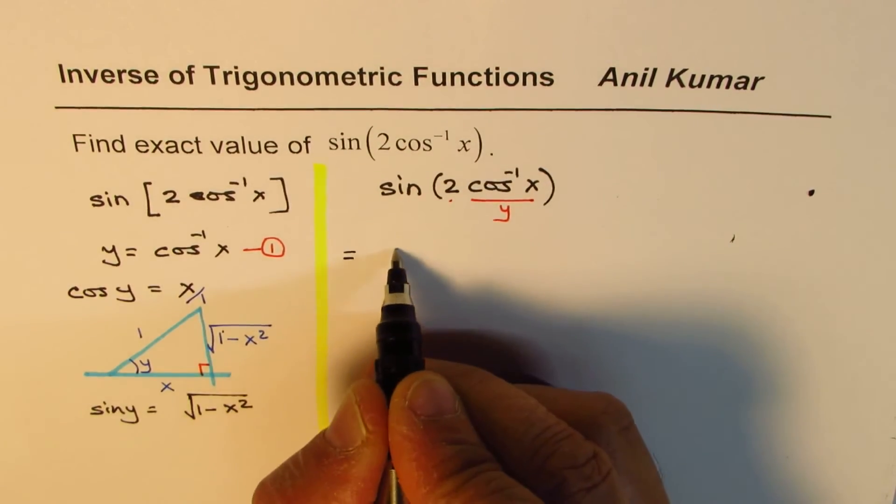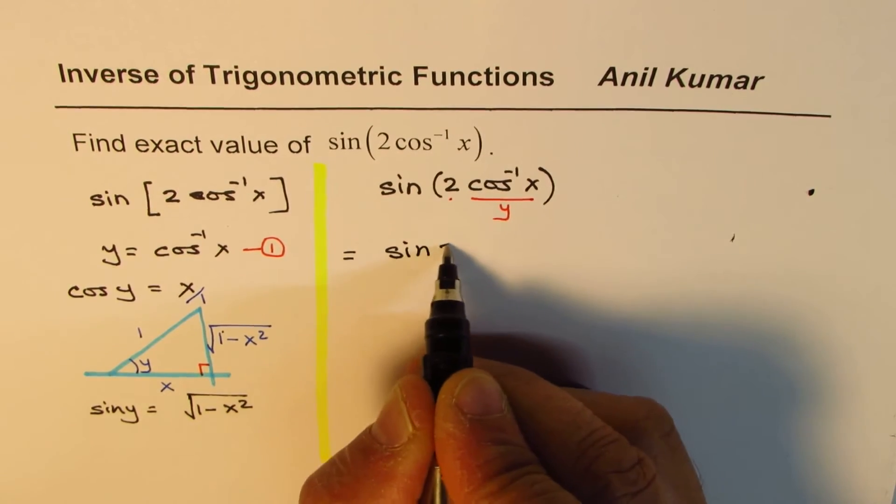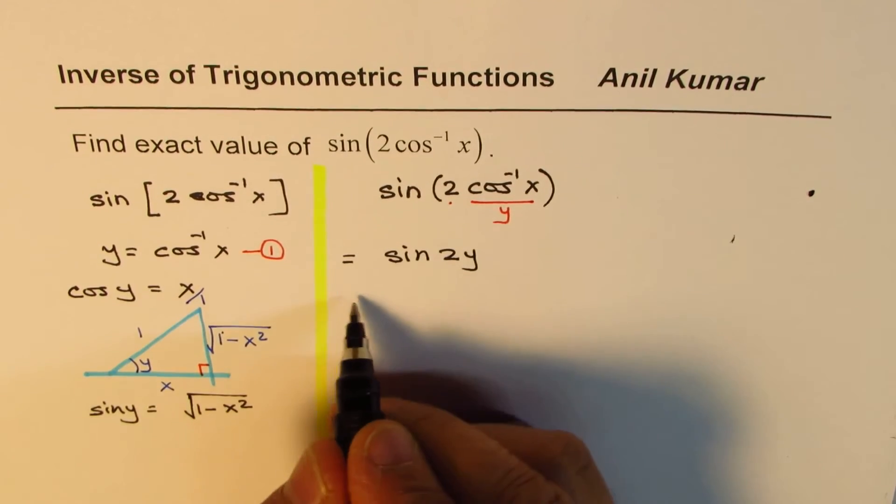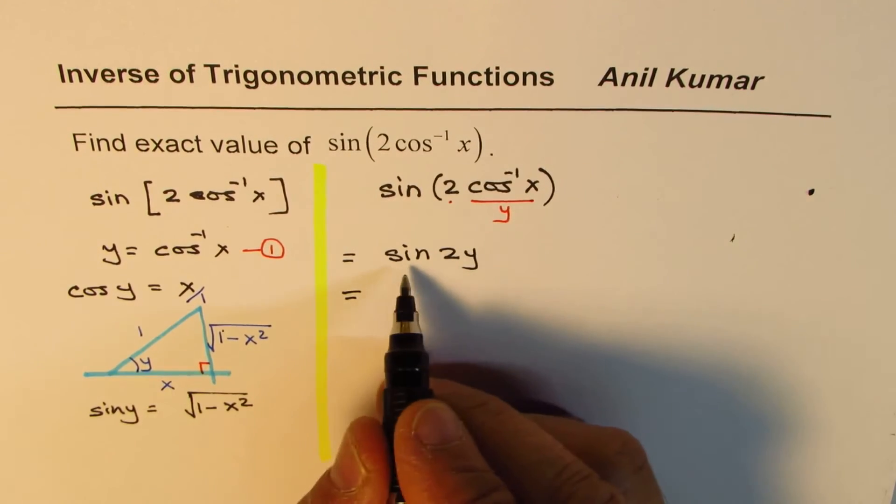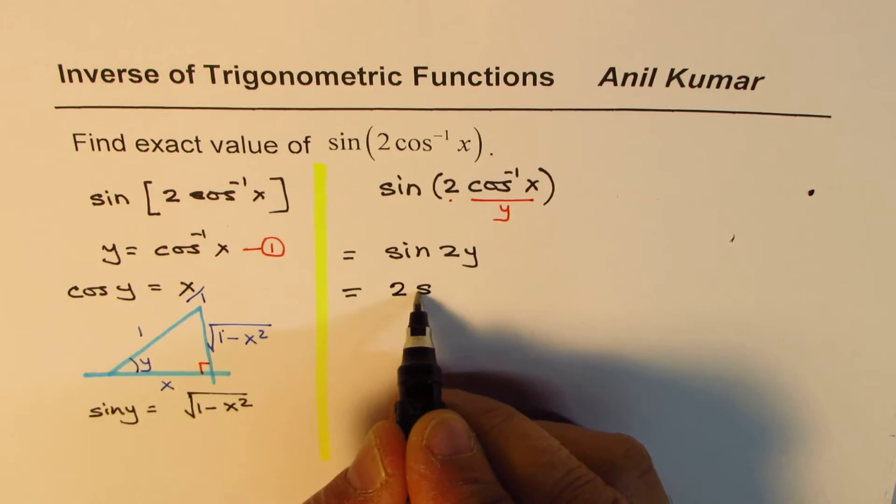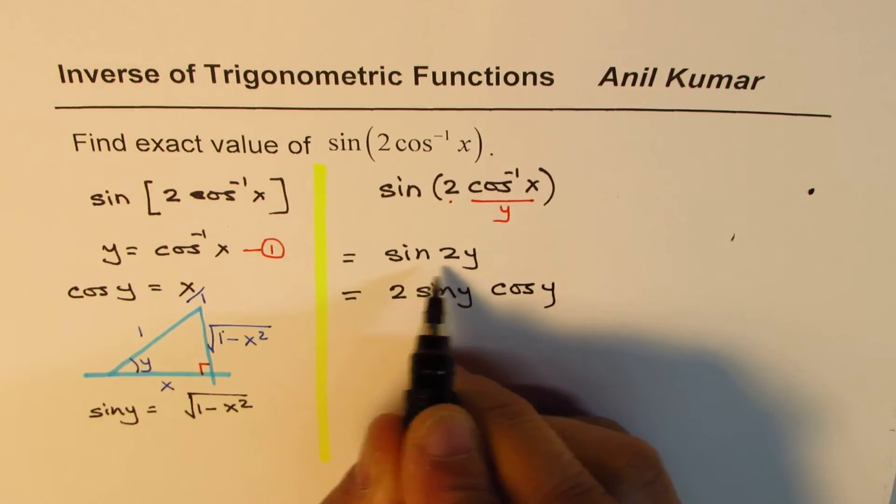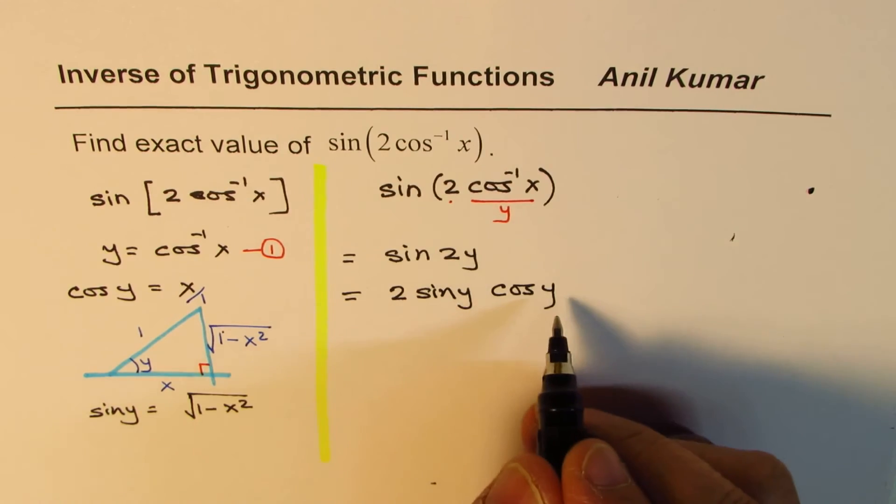We get this as sin 2y. Cos⁻¹x is y, so we get sin 2y. Now in trigonometry, we learn sin 2y = 2 sin y cos y.